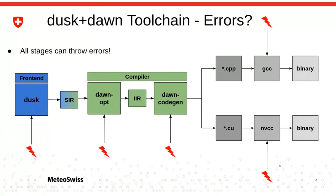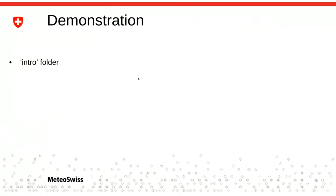It might even be that you generate bad code with the code gen and the NVCC CUDA compiler throws an error because it's not valid CUDA code. It would be ideal for the domain scientist — say a climate scientist — that the front end gives you errors, because the further down you are in the tool chain, the more cryptic the errors will be to a domain scientist.